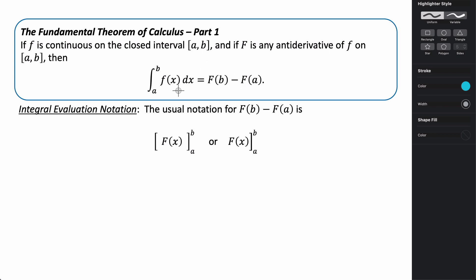This is the first time that we've really had an algebraic or analytic way to evaluate a definite integral. Basically, you take the antiderivative, plug in your upper limit, and then subtract the lower limit from it — that's how you evaluate your definite integral.